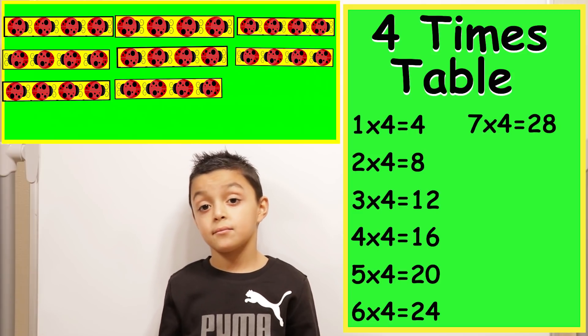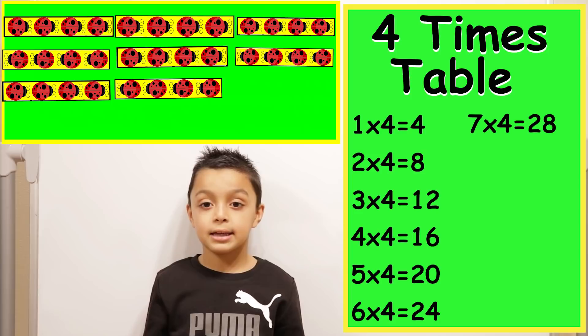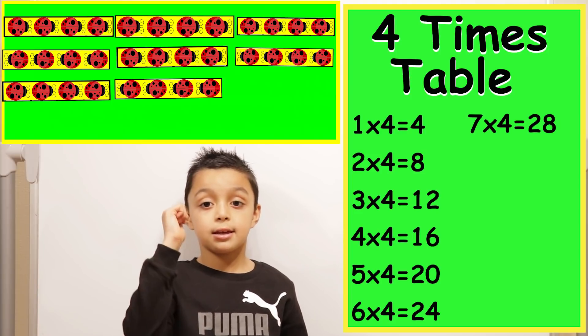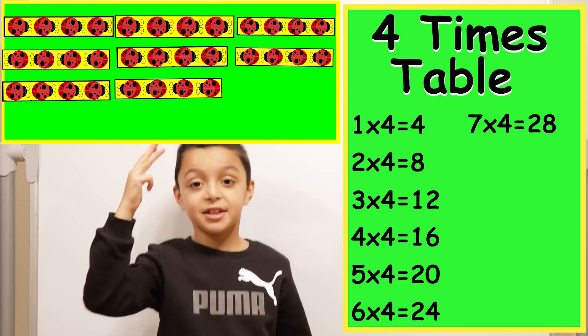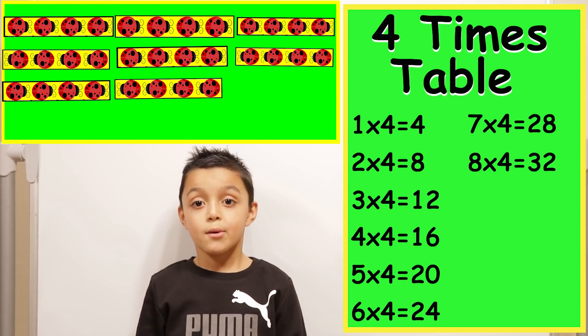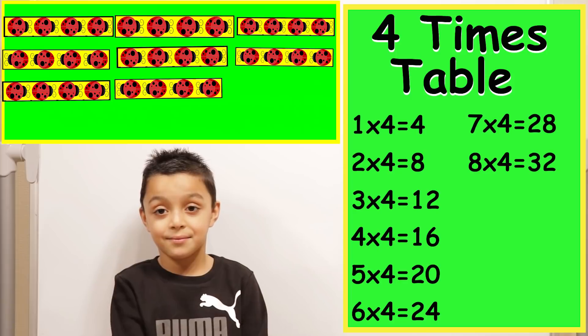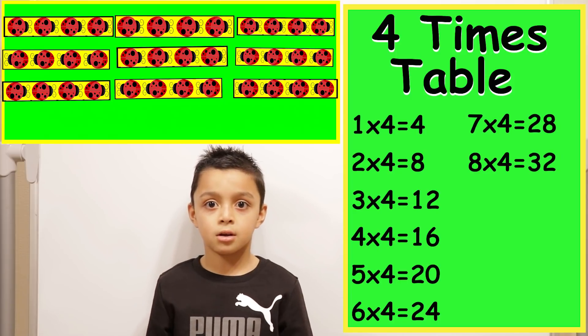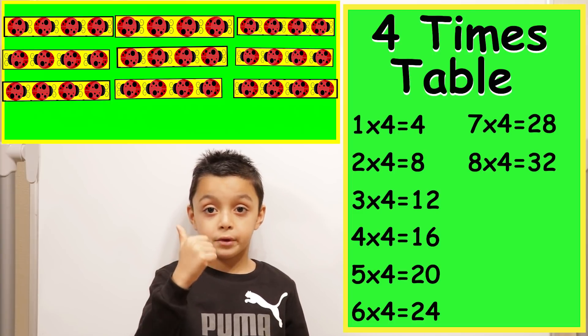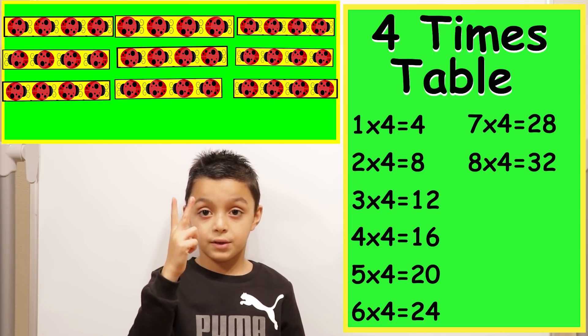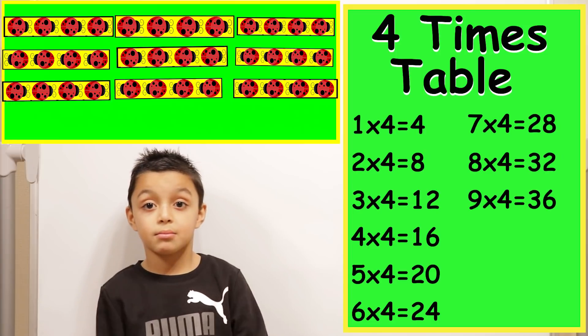What about eight times four? Eight times four, twenty-eight, twenty-nine, thirty, thirty-one, thirty-two. Eight times four equals? Thirty-two. What comes after eight times four? Nine times four. Okay. Can you look that one up first? So thirty-two, thirty-three, thirty-four, thirty-five, thirty-six. Very good.